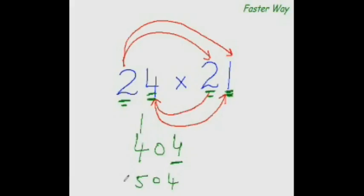The advantage of using this method is that you get the answers from left to right — the most significant digit first. These arrow patterns and markings are just a memory aid while you are learning this trick. Once you practice, you don't need them and will straight away put down the answer. Let's practice that and see how nicely you can follow this pattern.